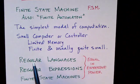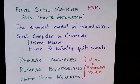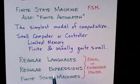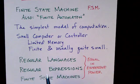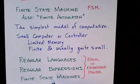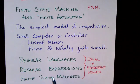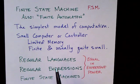We'll also be talking about regular languages and regular expressions as well as finite state machines. All three of these are equal in their expressive power. In other words, all three of these formalisms describe the same set of languages or the same class of language. We'll see that none is more powerful than the other, and each can be converted into the other. So these things are all, in some sense, equivalent.